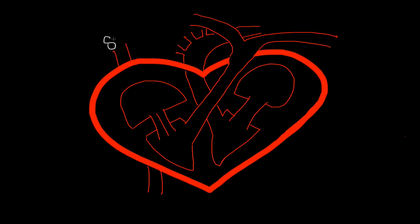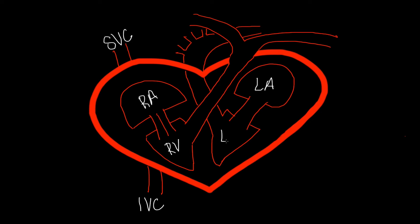So this here would be our superior vena cava, which I'm going to make SVC, and this is going to be our inferior vena cava. For any of you that have A&P books, even med-surg or pediatric books, the anatomy of the human heart is in those books repeated through a lot of pages, so always reference that. So we have our superior vena cava, inferior vena cava. This is going to be our right atrium, this is going to be our right ventricle, this would be our left atrium, and this our left ventricle.